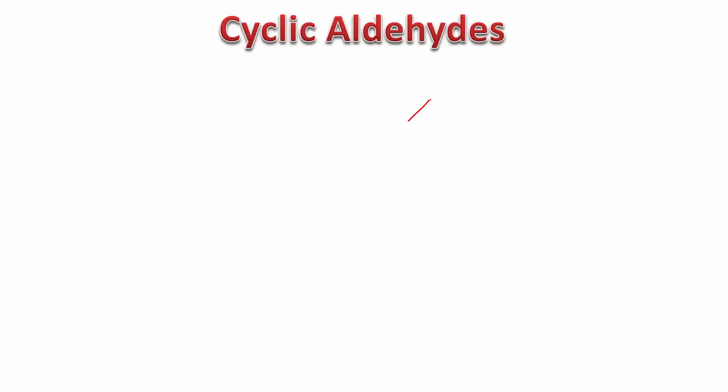Hello and welcome to this short video on the IUPAC nomenclature of cyclic aldehydes. We are going to look at ring systems in which there is an aldehyde group present. For example, if I have something like this where the aldehyde is present, I am first assuming a situation where the carbonyl carbon is directly attached to the ring.